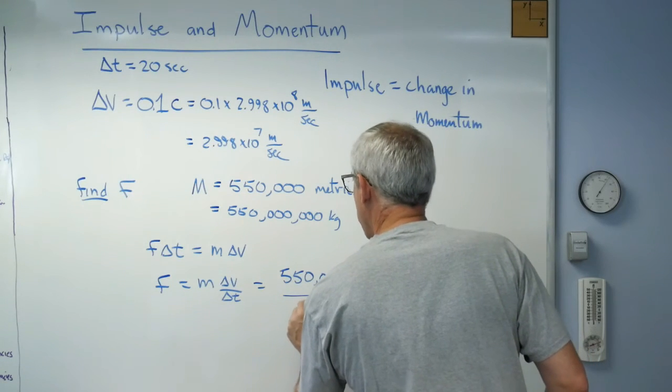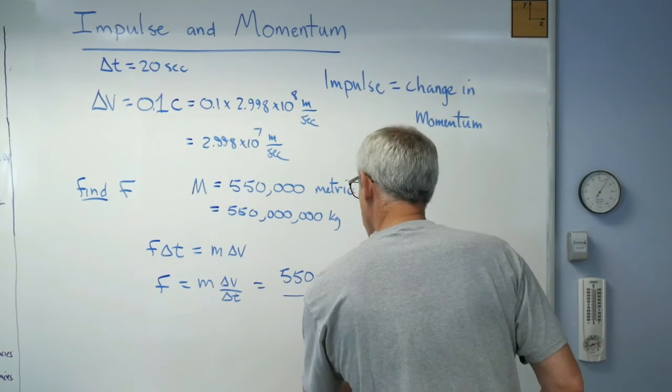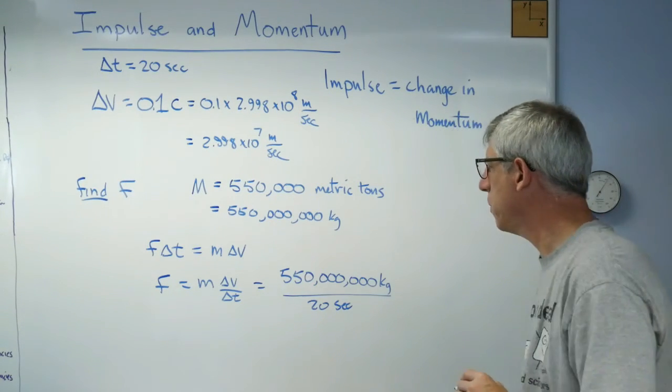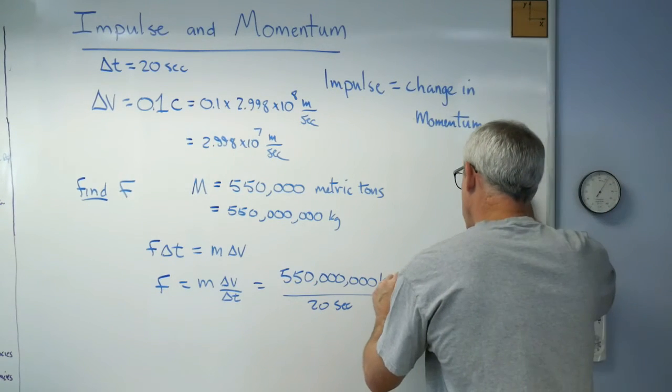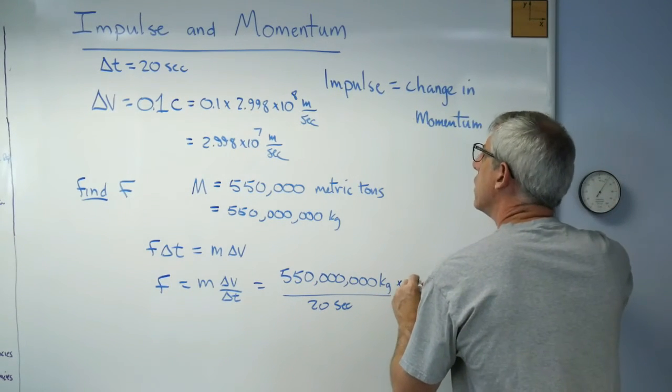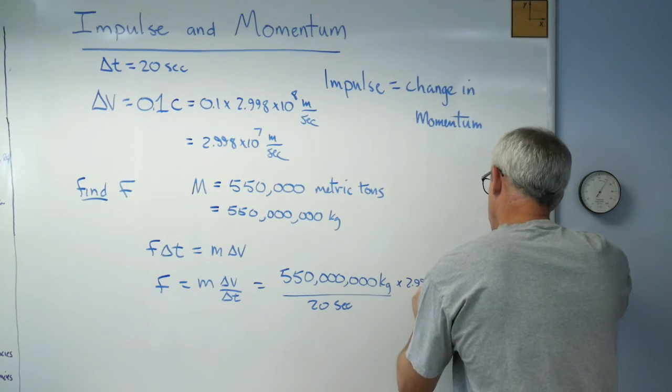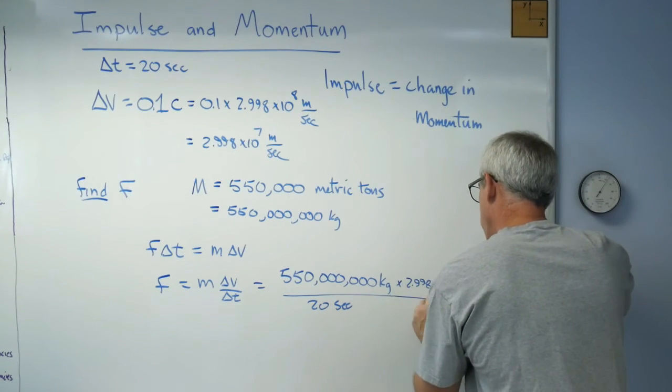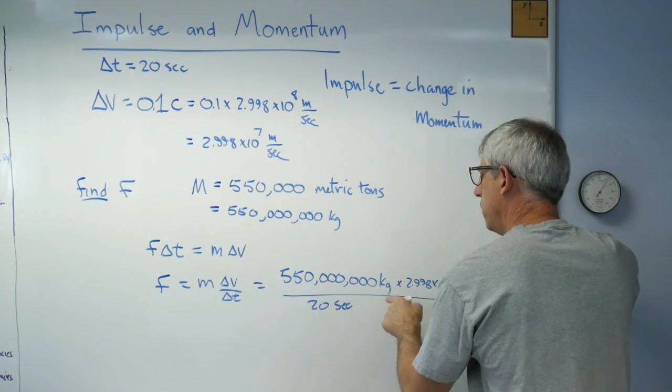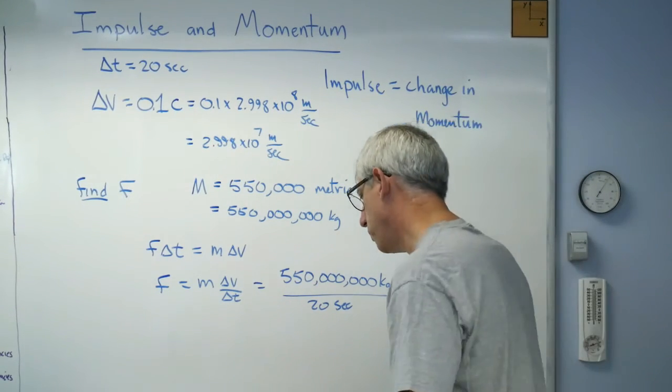Divide that by 20 seconds. Kilogram over seconds. Does that make sense? No, we've got to get light speed in there. That's going to be 2.998 times 10 to the 7 meters per second. So, mass, delta V, delta T. So what do you get? Let me see if I can get down one more row here.